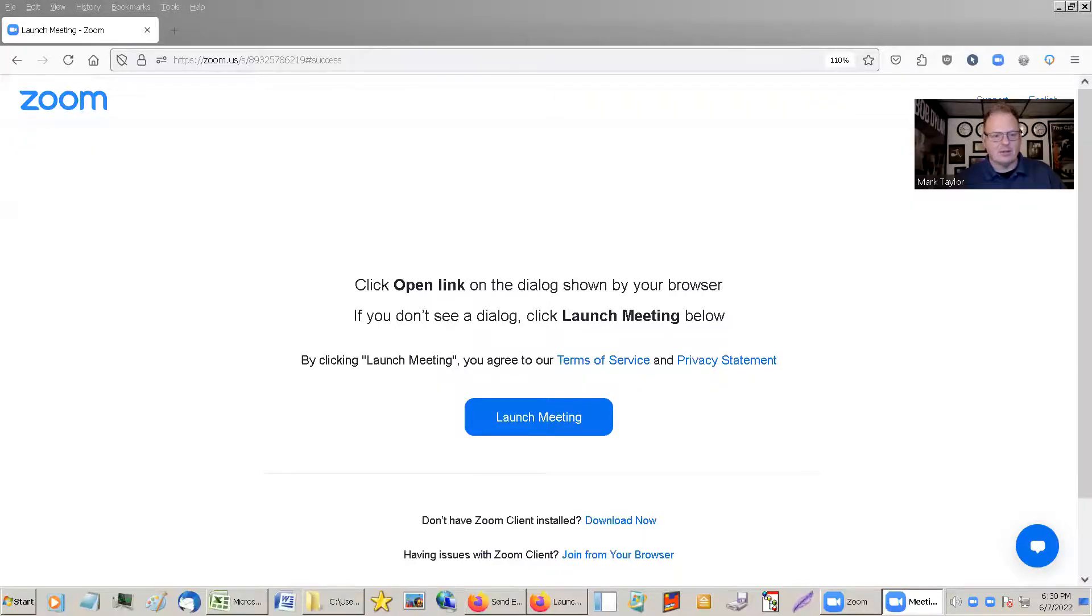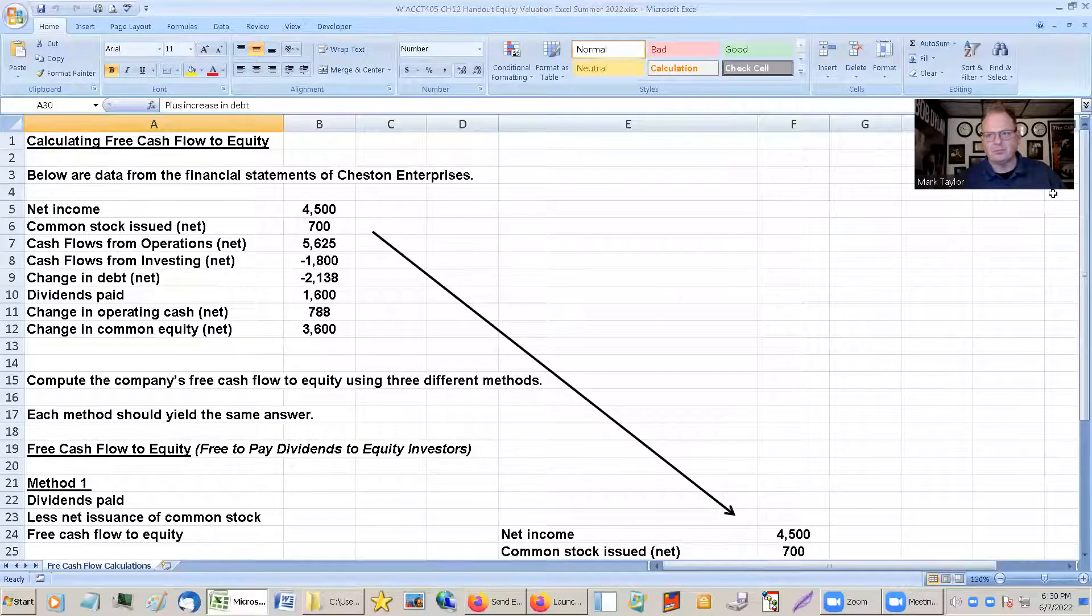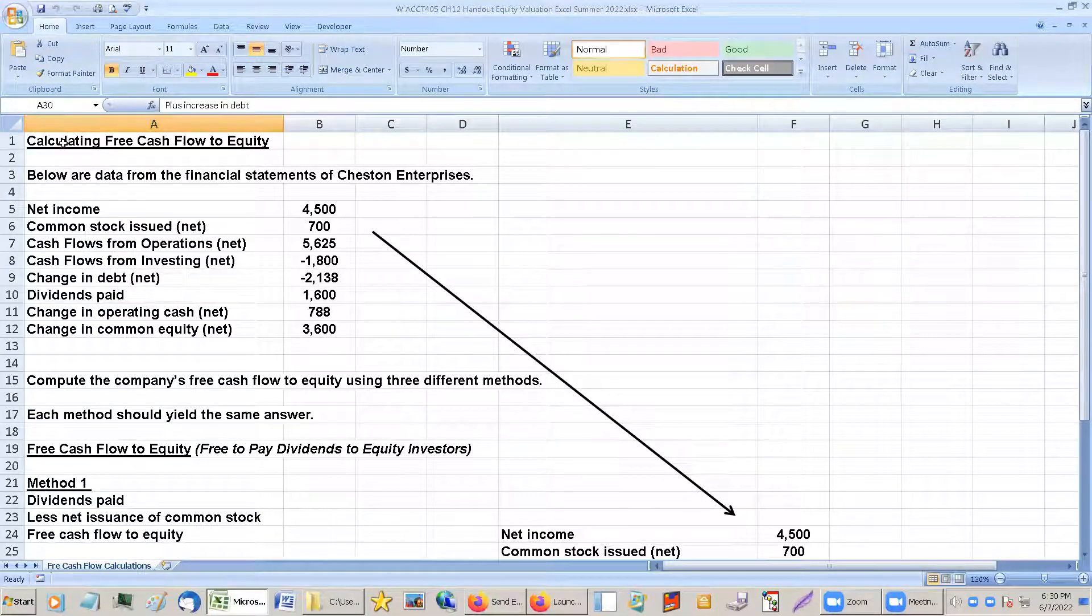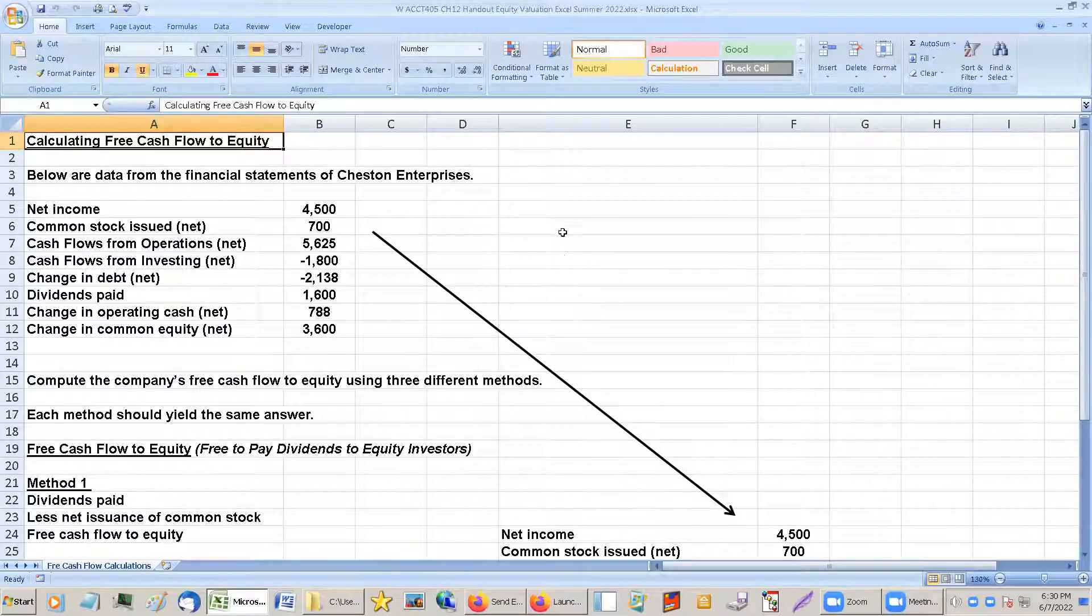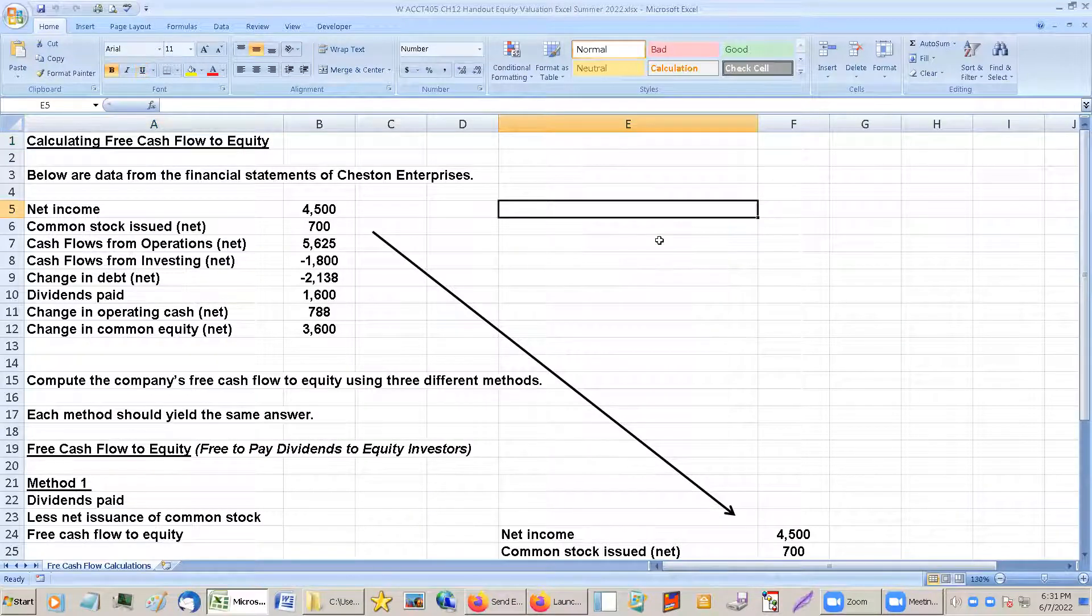Alright, last handout, chapter 12. We're only going to do one thing out of chapter 12, and that is connecting the free cash flow to equity. What this method is usually used for is companies that are not paying dividends.